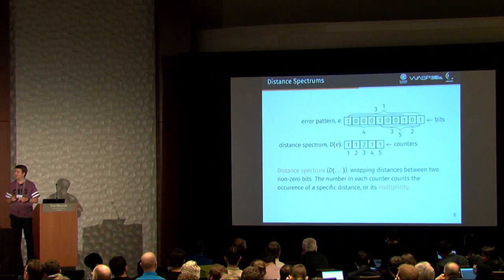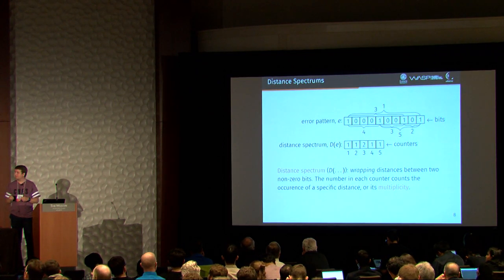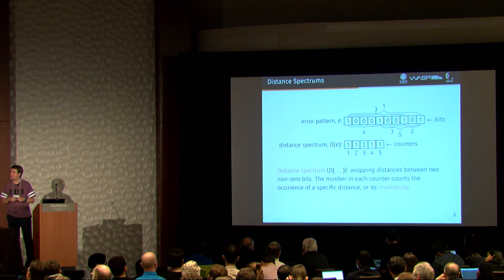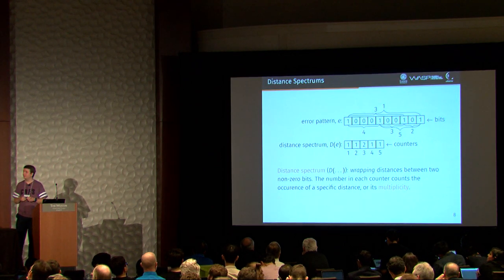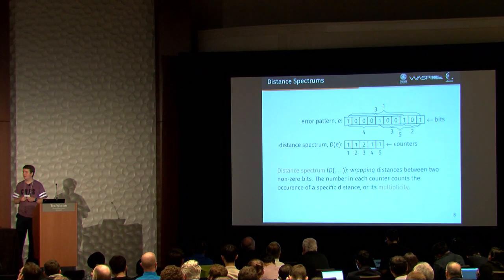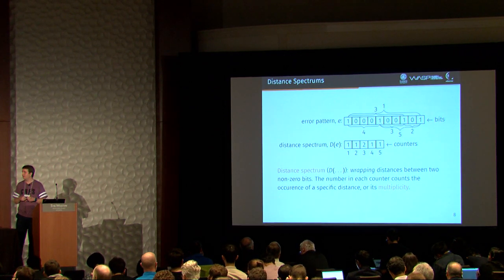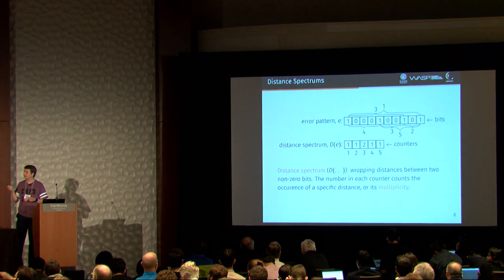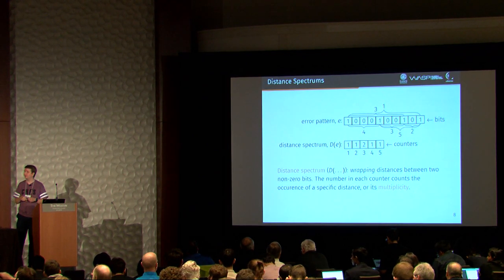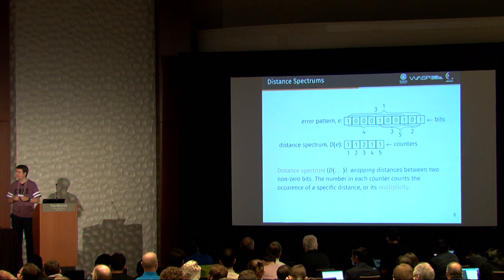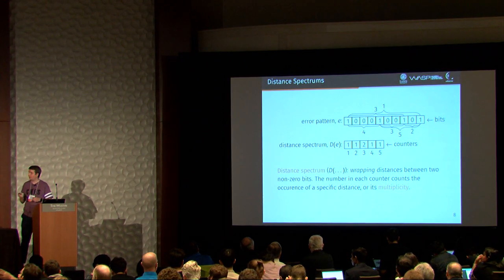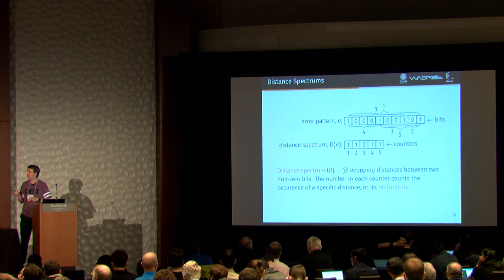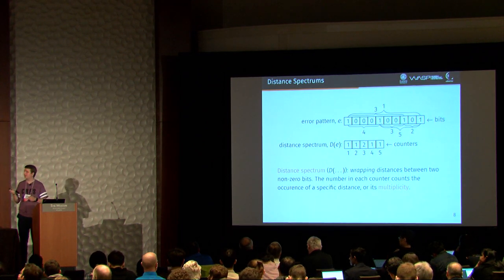So now you might wonder what the distance spectrum is. And it works like this, where we first have an error pattern at the top, and then we have the corresponding distance spectrum, D of V, below, where each index in the distance spectrum corresponds to a distance, and the values of each position is basically a counter of each distance. So we can see here that the distance of three occurs two times in this error pattern. So each counter, the value of each counter, we call this a multiplicity, because it determines the number of times we have each distance.